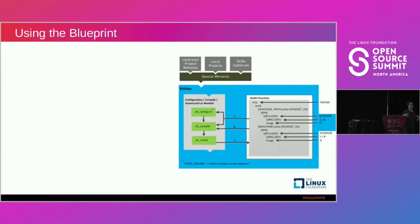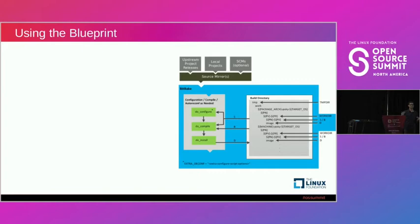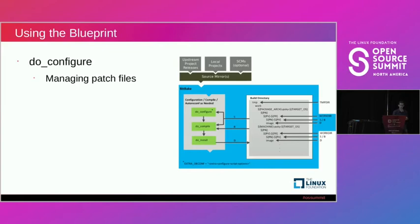In the Yocto project there is a list of recipes — each application generally has one recipe associated with it. When you run BitBake it parses the recipes and generates a bunch of tasks. Those tasks include things like fetching source, compiling source, and installing. After making this migration there are three tasks you'll become intimately familiar with: the do_configure task, the do_compile task, and the do_install task.